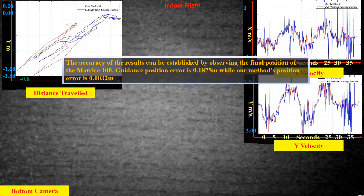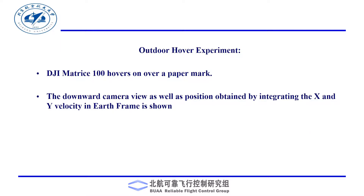These are the final errors in terms of position for that experiment. Next, we have performed some outdoor experiments. In this experiment, the Matrix 100 is allowed to hover over a paper marker.